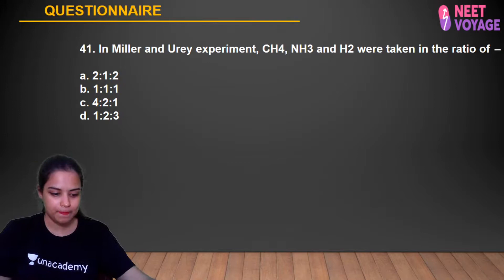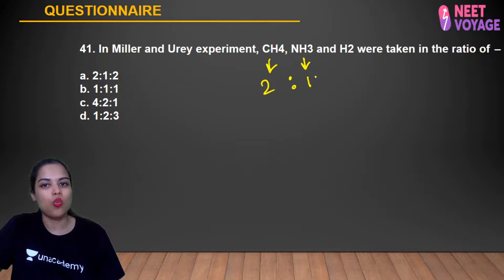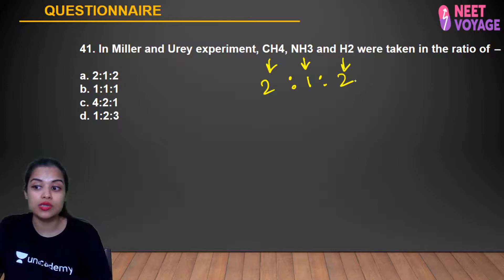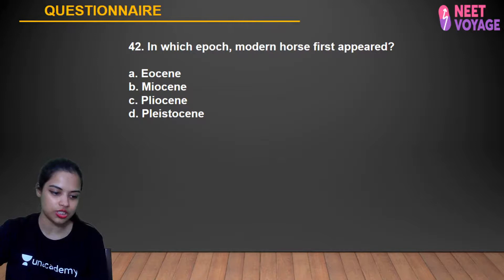Question 41: In the Miller-Urey experiment, what was the ratio of CH4 to NH3 to H2? The ratio used was CH4:NH3:H2 = 2:1:2. This is the concentration ratio used in the experiment that simulated early Earth conditions to produce amino acids. The answer is 2:1:2. Samreen, Anusha, Alok, Sabah, and Shashank gave the correct answer.